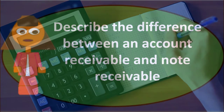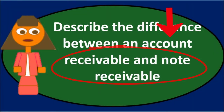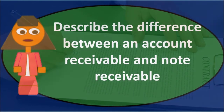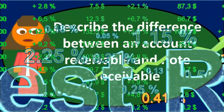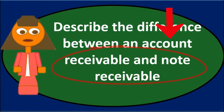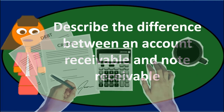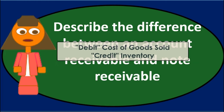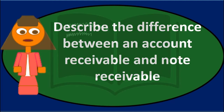The journal entry to record notes receivable is very similar to accounts receivable, except we replace accounts receivable with notes receivable. If we got a formal note when we made the sale — because the dollar amount was larger, we wanted to charge interest, or the terms were longer — we would debit notes receivable and credit sales revenue, income, or fees earned. We would also debit cost of goods sold and credit inventory if we sell inventory under the perpetual method.